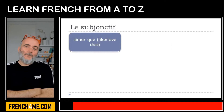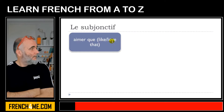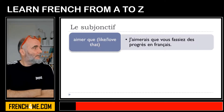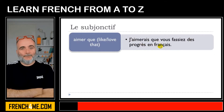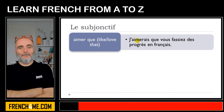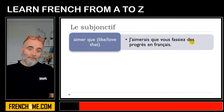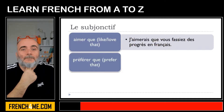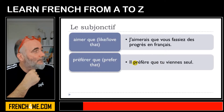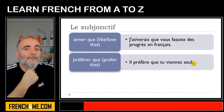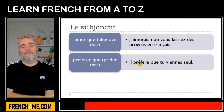The first one is aimer que — 'like, love that'. Exemple : j'aimerais que vous fassiez des progrès en français. Next, préférer que — 'prefer that'. Ils préfèrent que tu viennes seul.